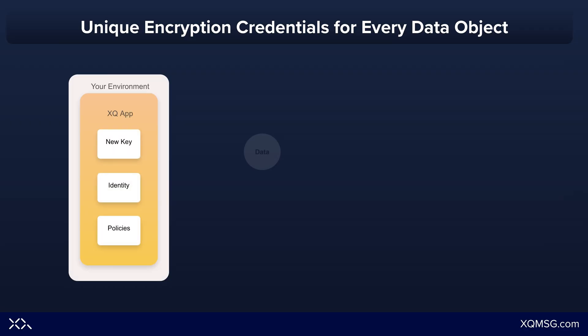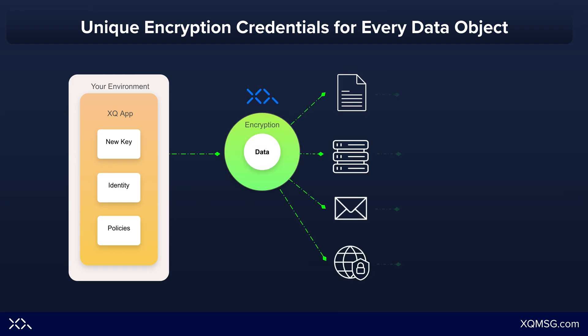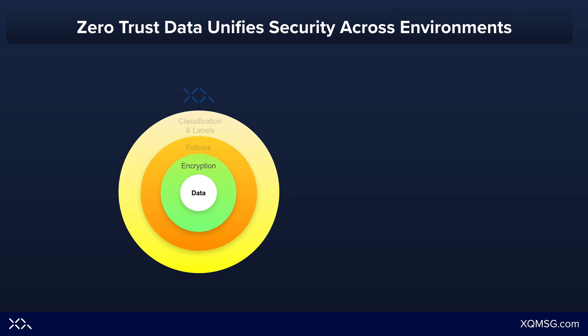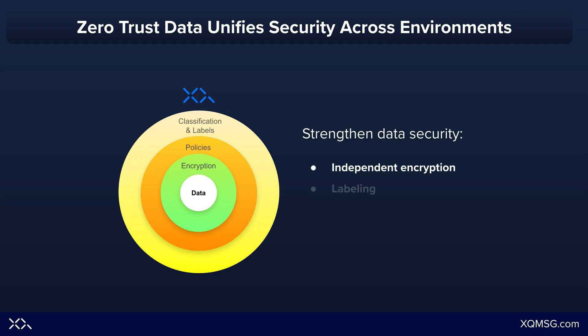With XQ, each data object is encrypted with its own unique key that is stored with the XQ key store. Each key acts as a trust anchor, giving you control everywhere the data goes. The key store can be part of your own controlled environment or with the XQ SaaS solution. Once encrypted, each key is policy labeled and classified in accordance with organizational policies. Each object is monitored independently and controlled individually.